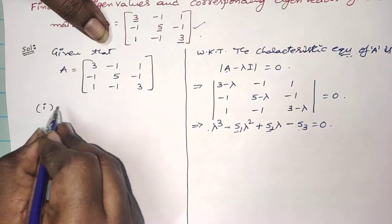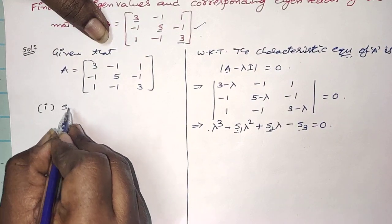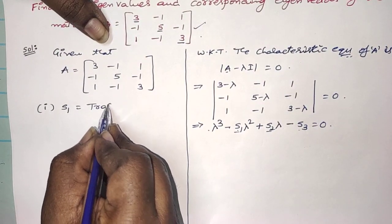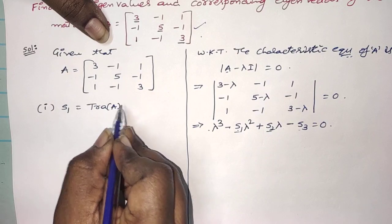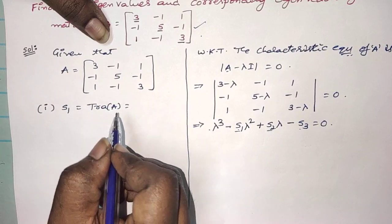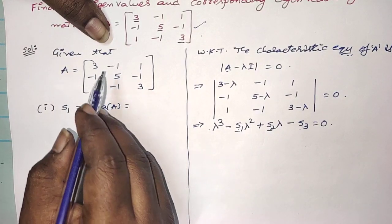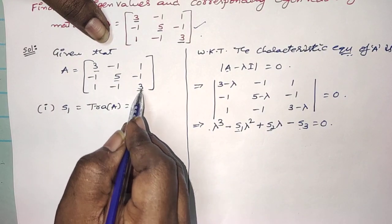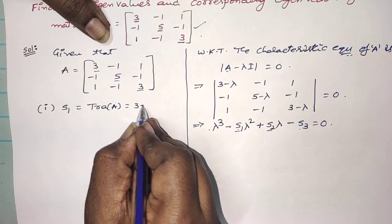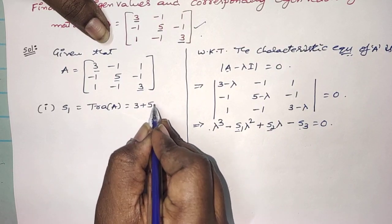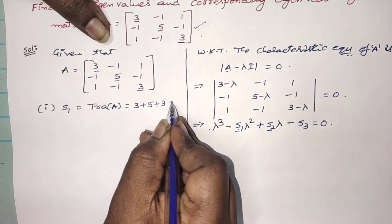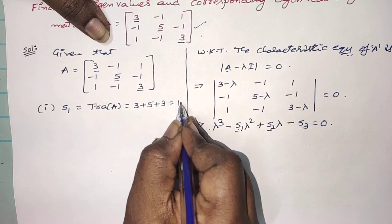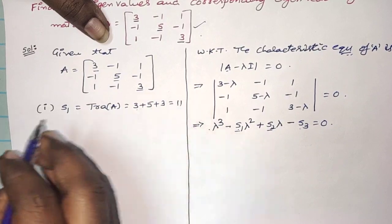First of all, we have to find out S1. What is S1? It is the trace of the given matrix — the sum of the diagonal elements. So it would be 3 plus 5 plus 3, which is 11. This is S1.